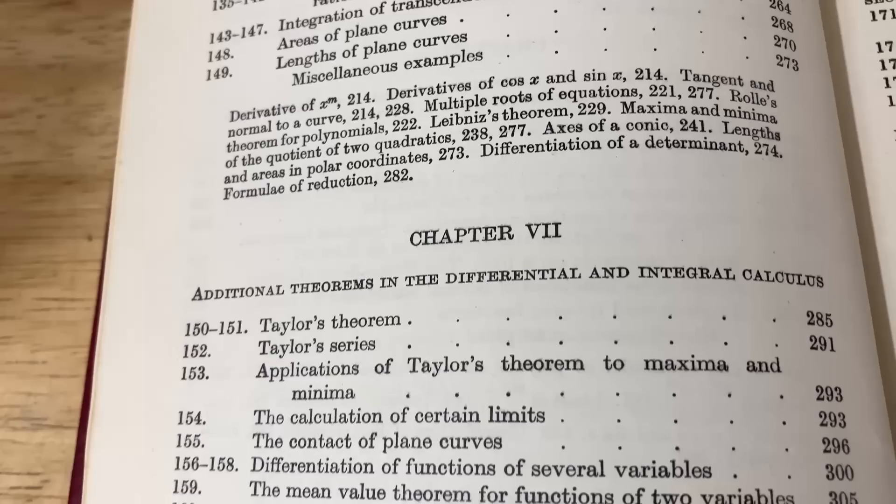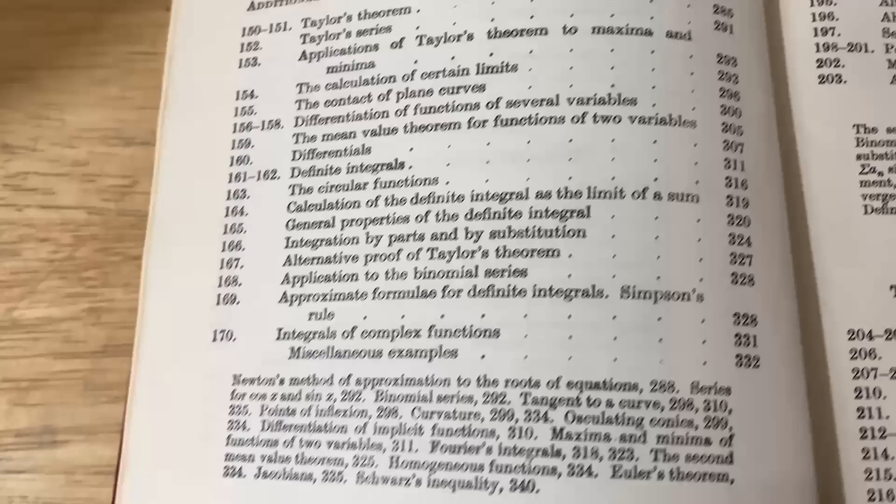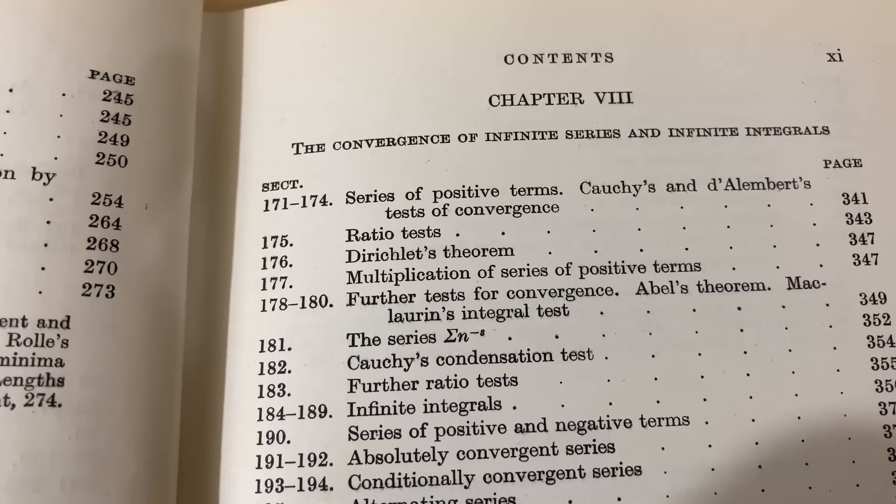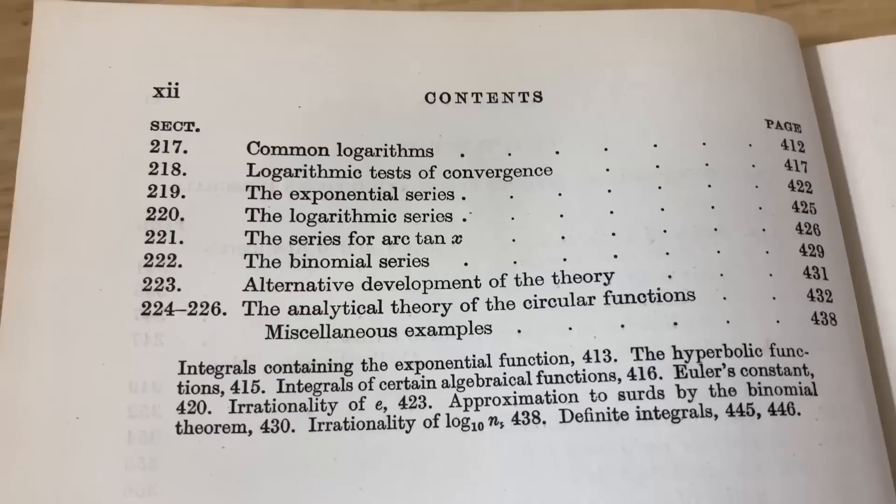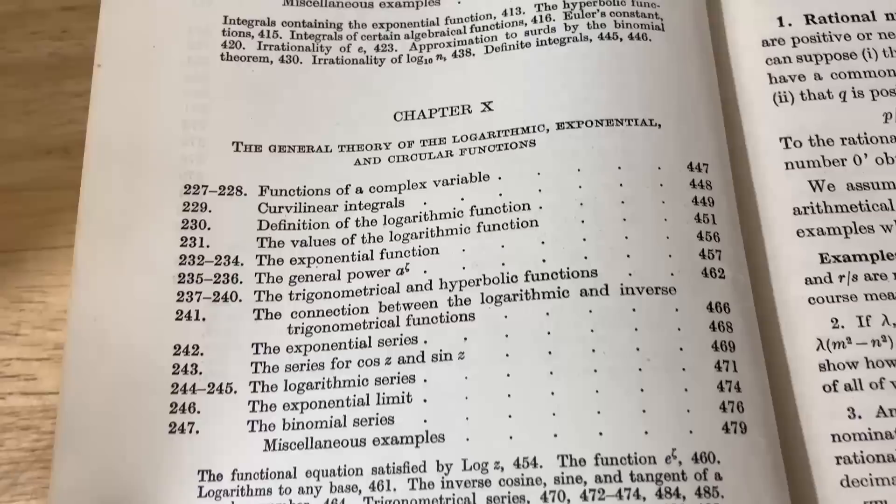Here's chapter seven. It talks about Taylor series. These are topics that you might be familiar with if you've had some math classes like calculus. Chapter eight is on the convergence of infinite series and infinite integrals. This is something you might study in a calculus two course. Chapter nine is on the logarithmic exponential and circular functions of a real variable. And here are the rest of the contents.